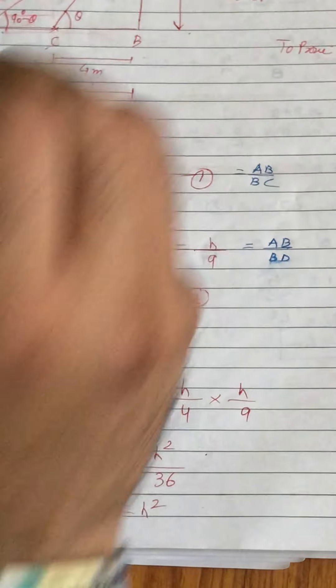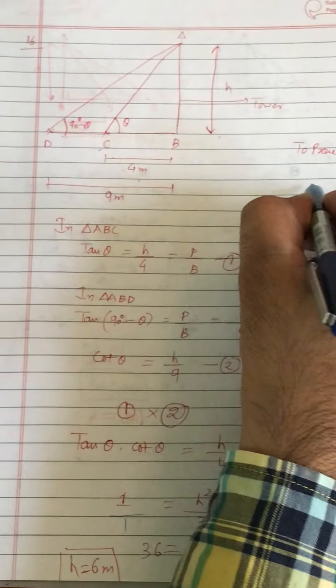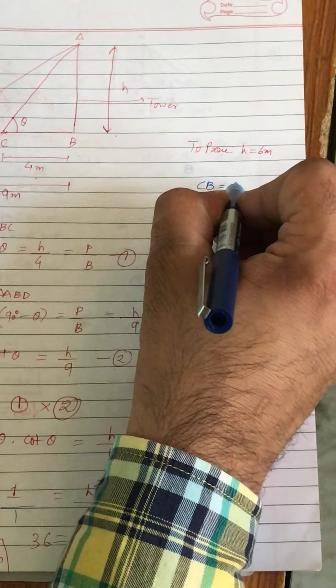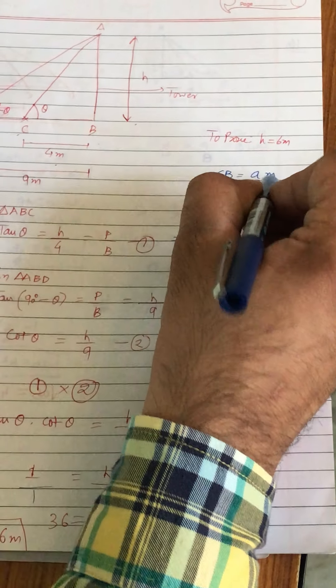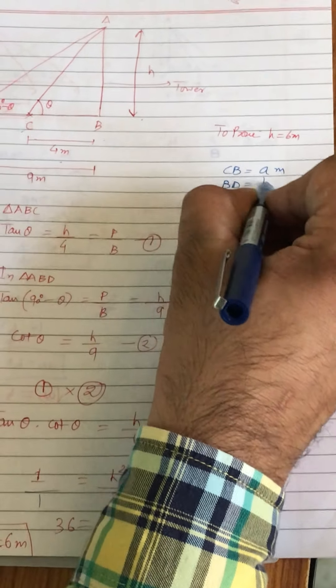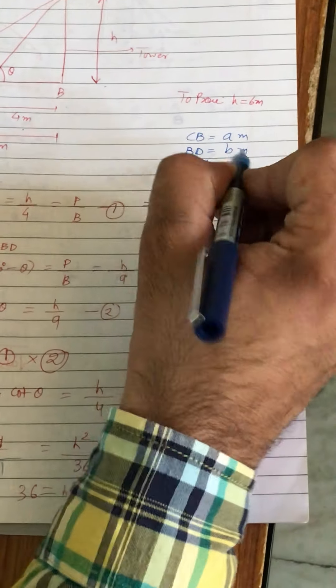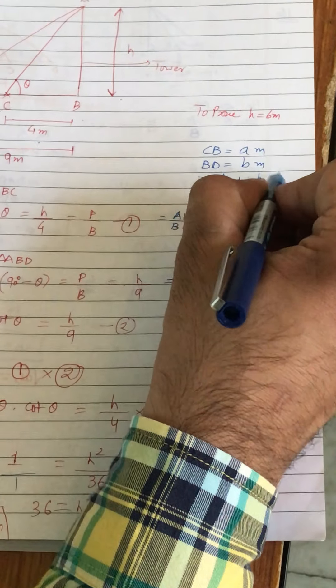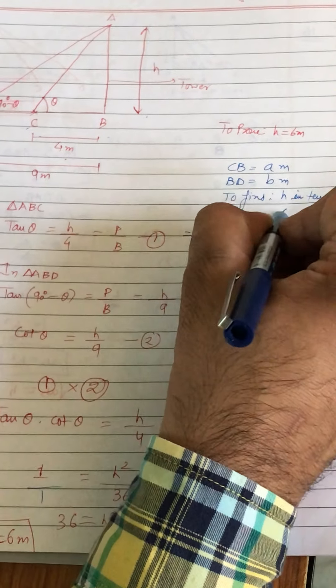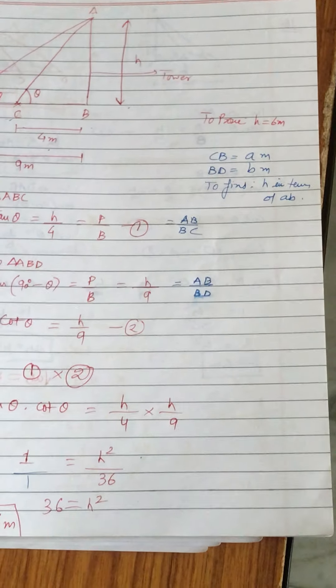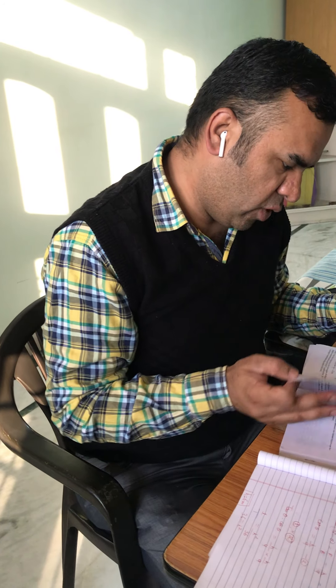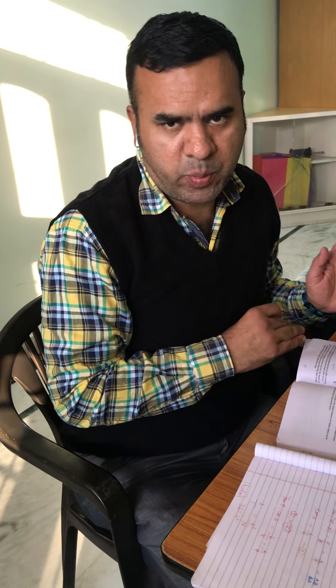H aajayega 6 meter. Iske basis pe aapko ek question de raha hoon — agar CB diya hua ho small a meter, aur BD diya hua ho small b meter, to aapko bataana hai h in terms of a and b. Questions 11, 12, 13 aapke liye chhode hain. Class, this was from NCERT Exercise 9.1. From RD, we will do that chapter very soon. Thank you.